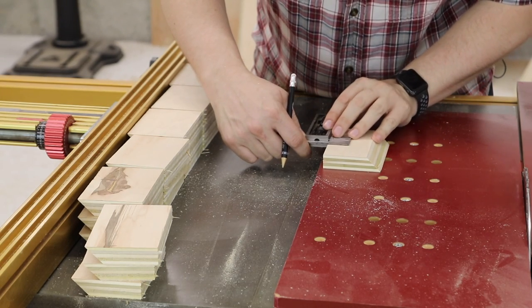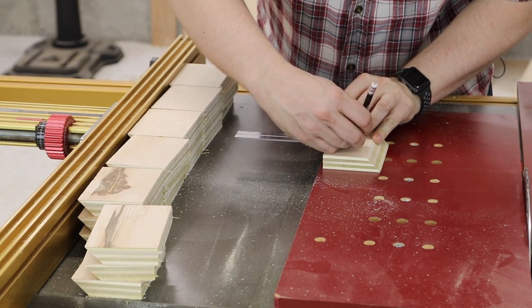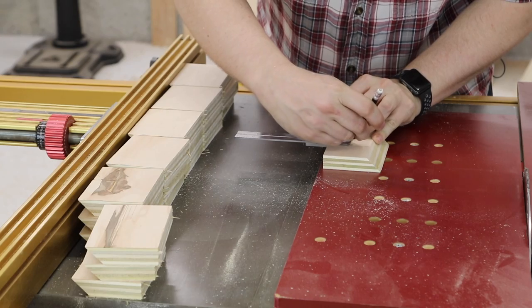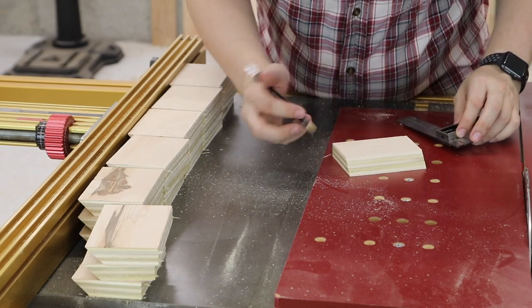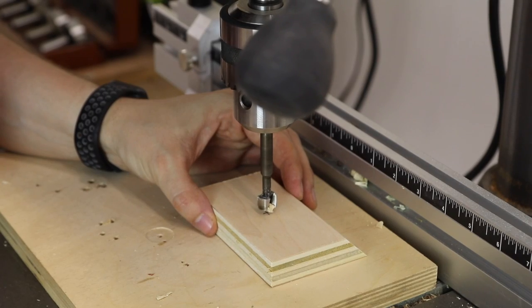And then on all those pieces with my square I marked out the center from the bottom before the 45 degree and then eyeballed the center horizontally on the piece.